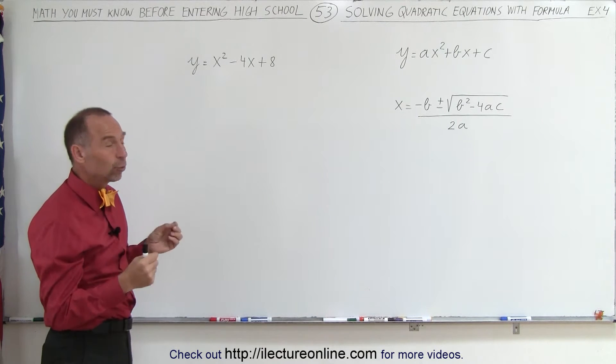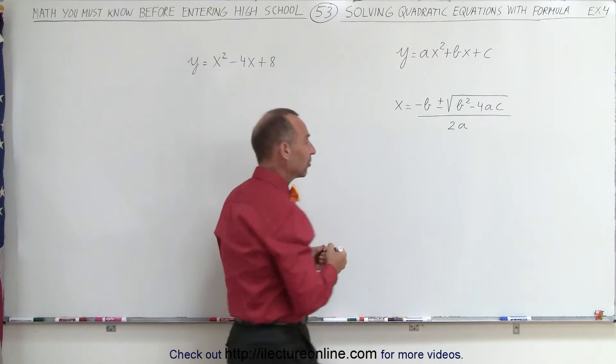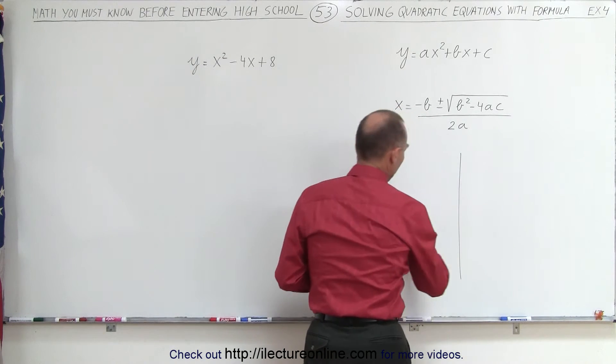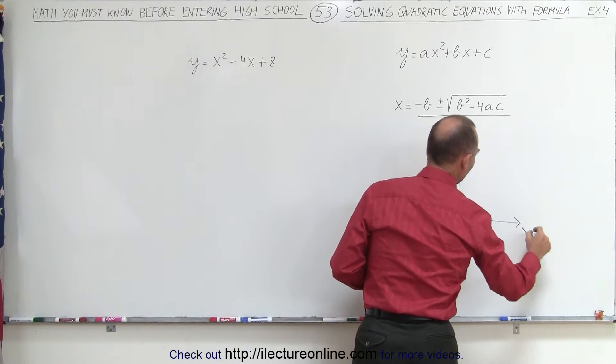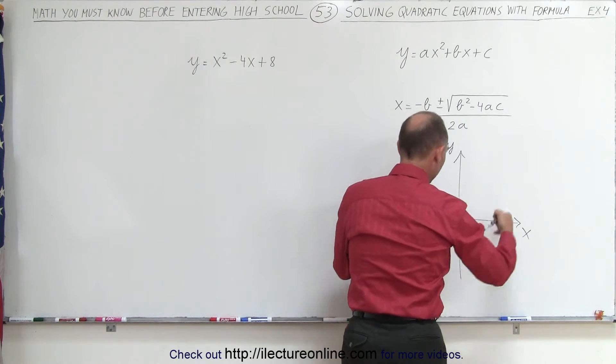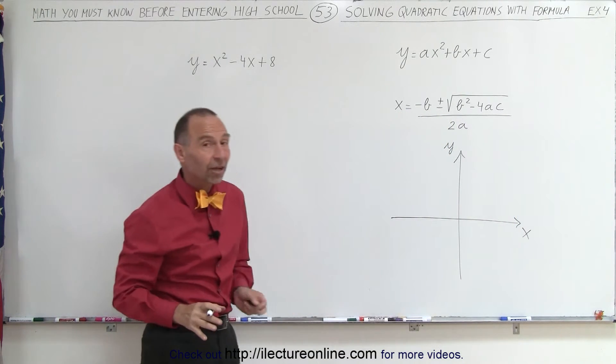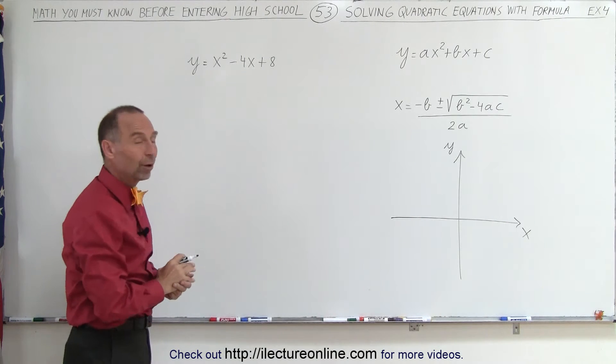Which means we're looking for the places where the graph crosses the x-axis. So when we have our xy-axis, we're looking for the places where the graph will actually cross the x-axis. In some cases it doesn't, but let's see if this is one of those cases.